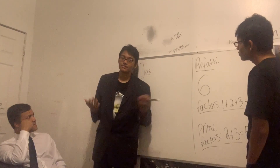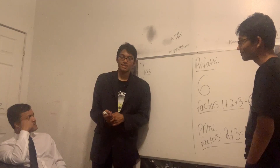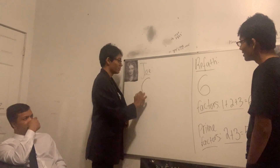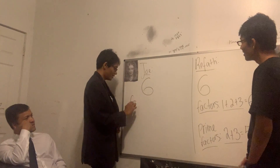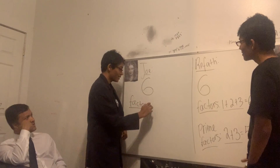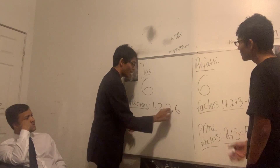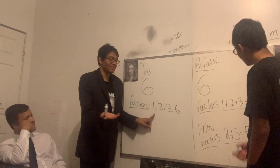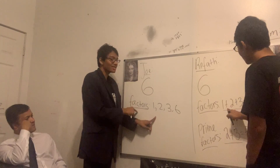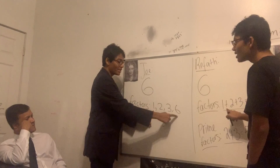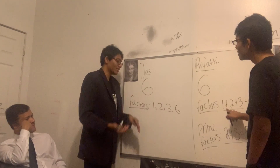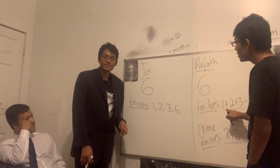Factors of six — pretty easy, this is almost a joke for me. Factors of six is gonna be not only one and the number itself, but also two and three. Why are these factors of six? Factoring is all about multiplication. One times six gives you six, two times three gives you six — that's why these are factors.